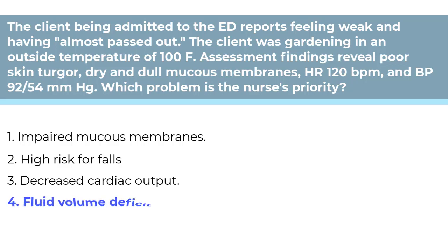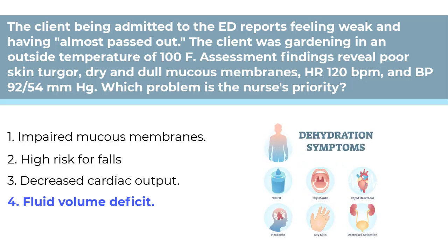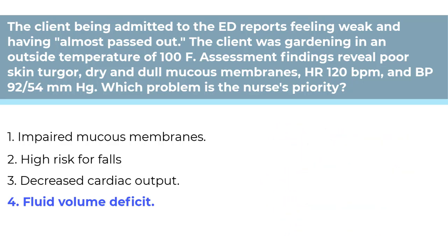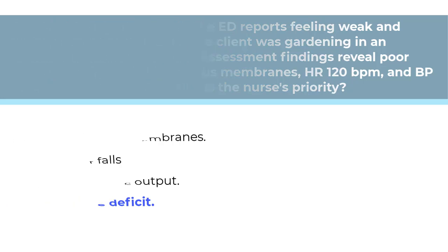The correct answer is Number 4, Fluid volume deficit. The client is showing evident signs of dehydration and hypovolemia, such as weakness, syncope, poor skin turgor, dry and dull mucous membranes, and hypotension. The other answers are incorrect for the following reasons. Number 1, the nurse should care for the client's mucous membranes, but it's not a priority. Number 2, falling is a concern, but the client is now talking. Number 3, there are no symptoms of decreased cardiac output. Most clients need a MAP of at least 60 mmHg; normal range is considered 70 to 100.